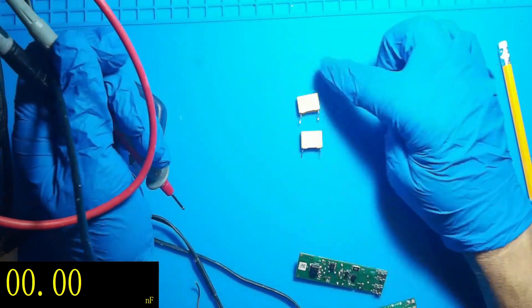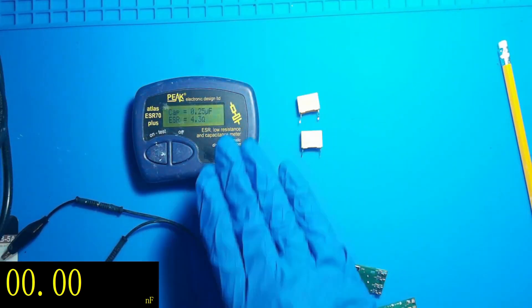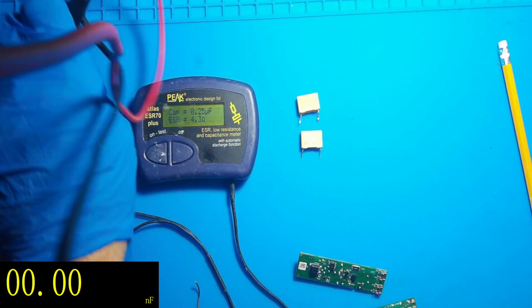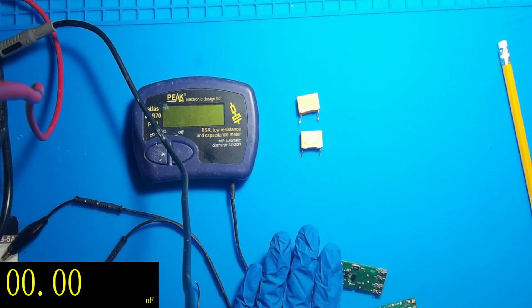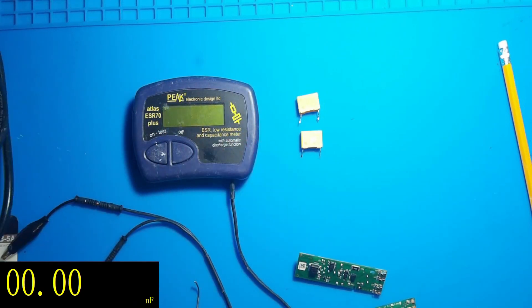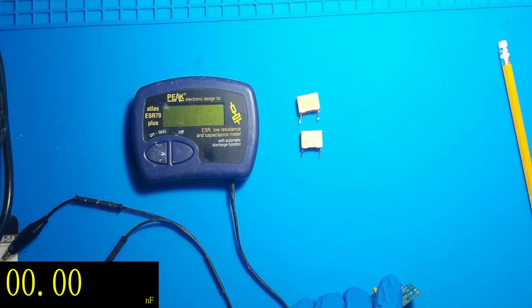So as you saw, measuring it with a capacitance meter I couldn't really tell which was good or bad. But the good old ESR meter immediately identified the bad one, even when it was in circuit, so I don't have to desolder anything. This is why I use an ESR meter. They're very useful, especially with power supplies. They are a must. This particular model is about a hundred pounds. You can get cheaper versions around 30-40 pounds, but definitely one to have in the workshop. Many thanks for watching.